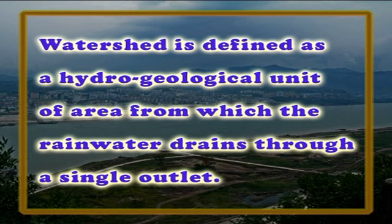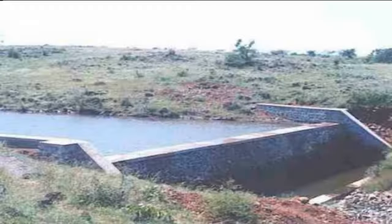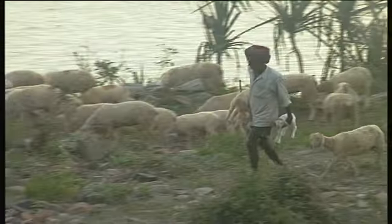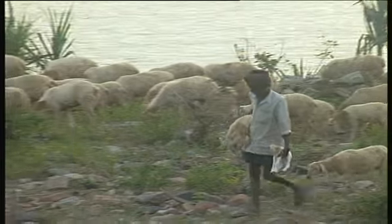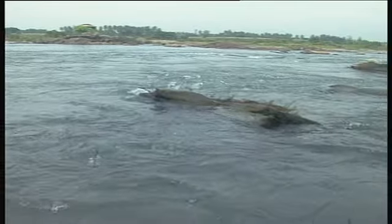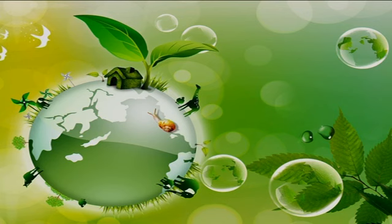Next are wasteland regions. A watershed is defined as a hydrogeological unit of area from which the rain water drains through a single outlet. Watershed development refers to the conservation, regeneration and judicious use of all the natural resources like land, water, plants and animals by human beings. Watershed management brings about the best possible balance between natural resources on the one side and human beings on the other. Human beings and the ecology are interdependent.